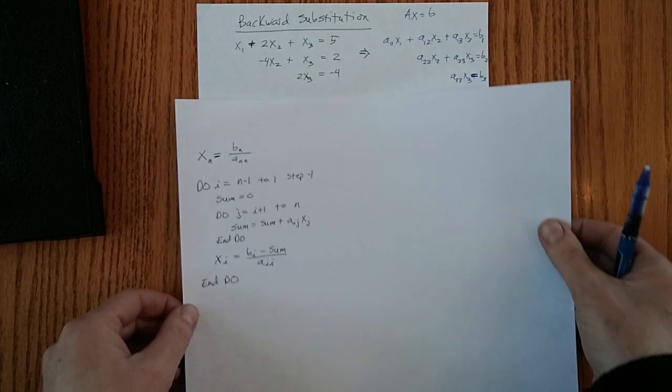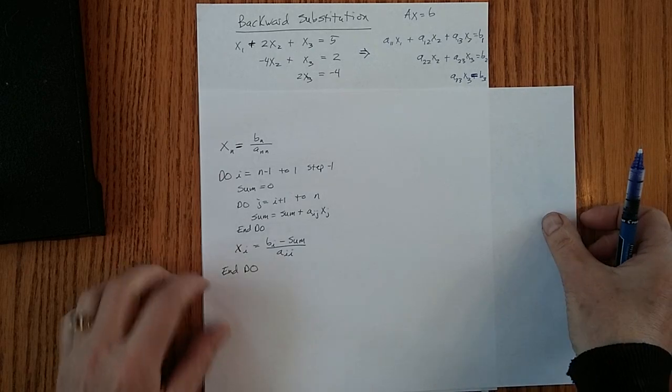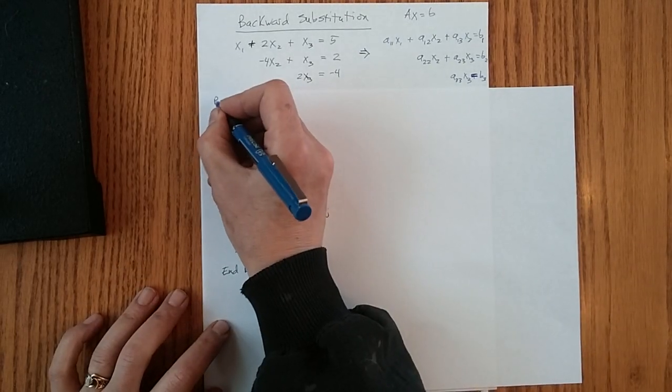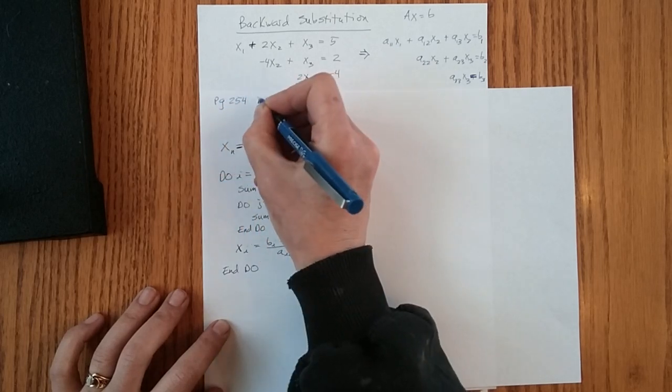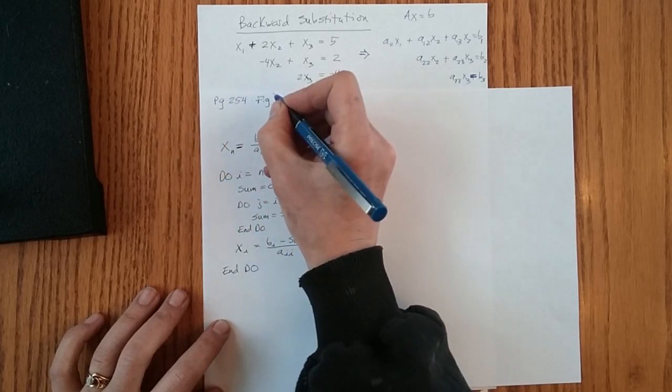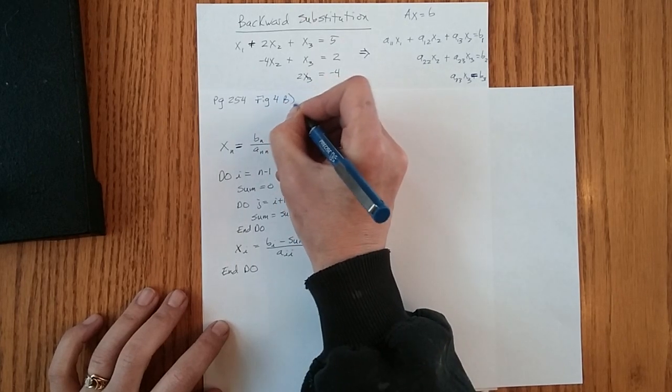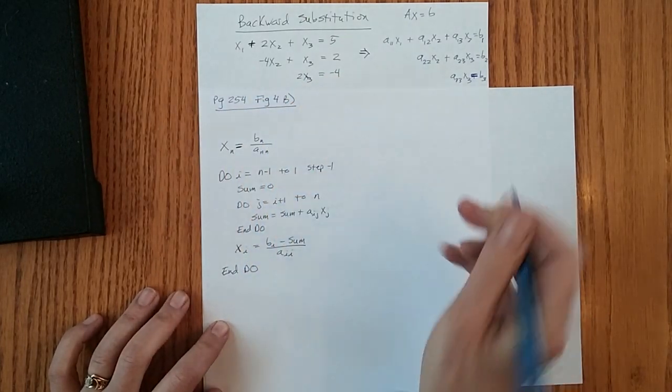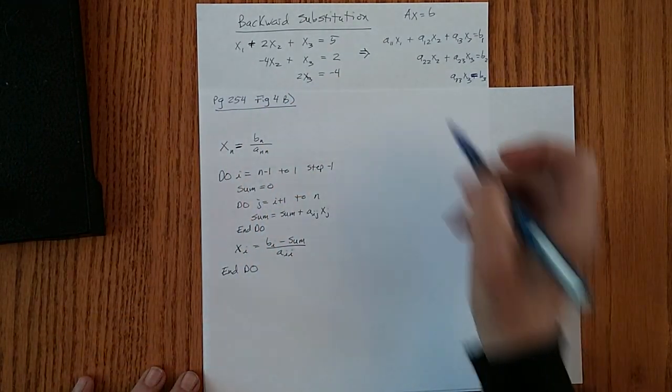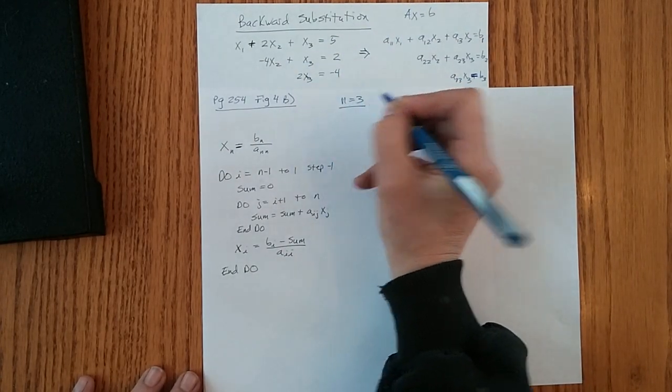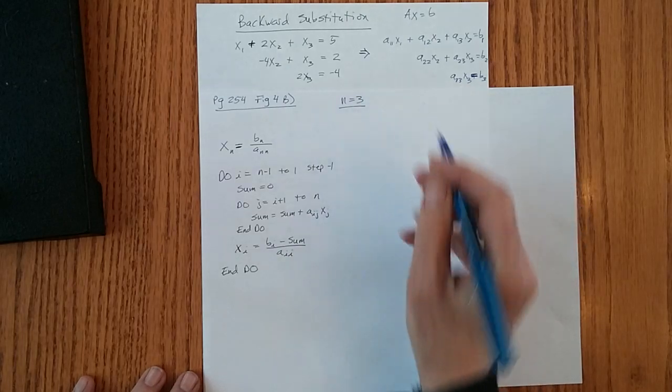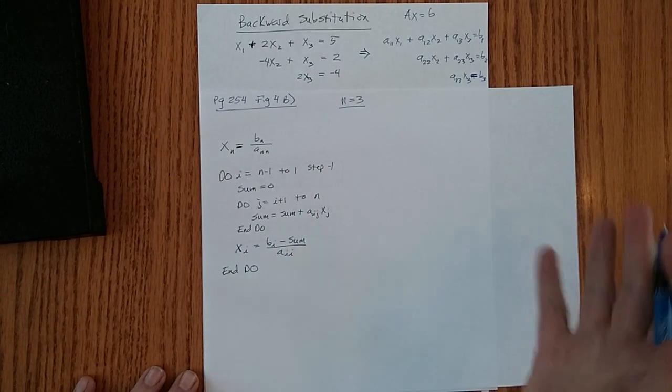Okay, here's our pseudocode. And I took this from the book, page 254, figure 4b. So for our example, we know n equals 3. We have three equations, three unknowns. We have to have a square matrix, n equals 3.